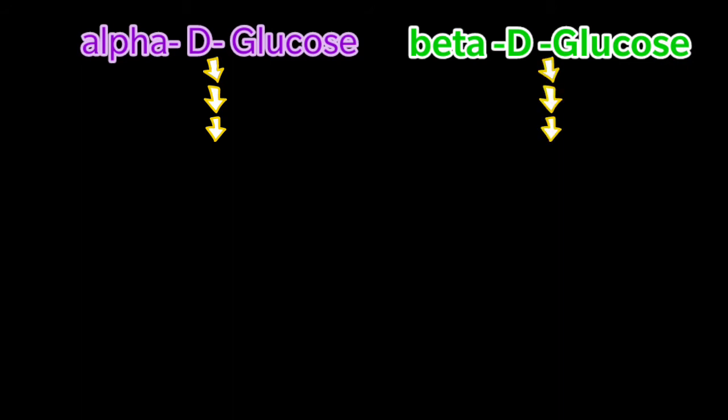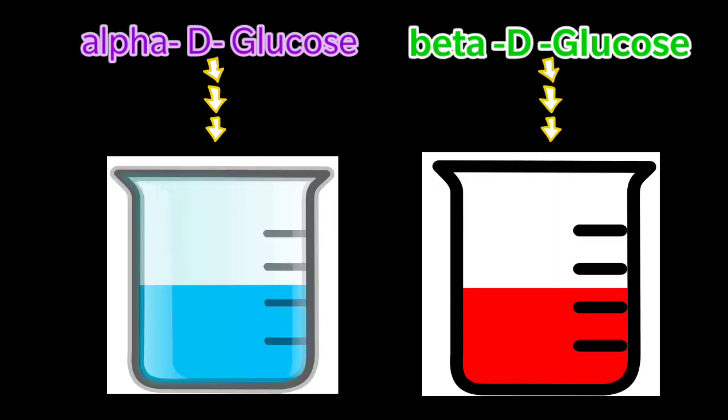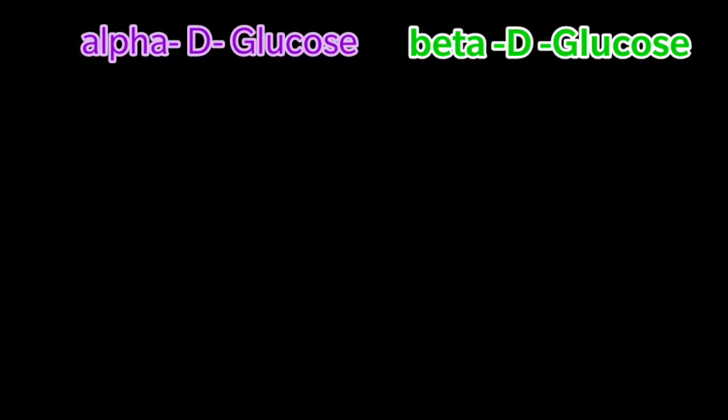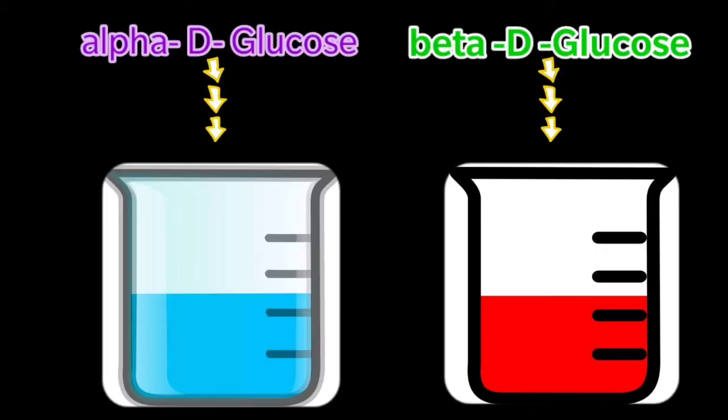Coming to mechanism of mutarotation. To understand the mechanism, we have to prepare two sugar solutions using optically active sugar. Optically active means sugar which has the ability to rotate the light. So here we are using D-glucose and its anomers, that is alpha-D-glucose and beta-D-glucose. So using the crystalline forms of alpha-D-glucose and beta-D-glucose, we prepared two solutions.